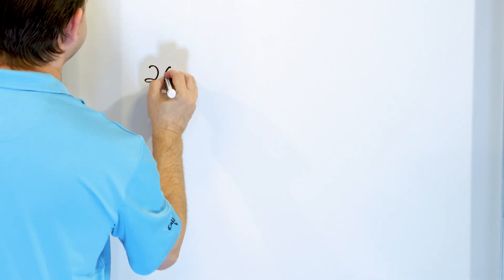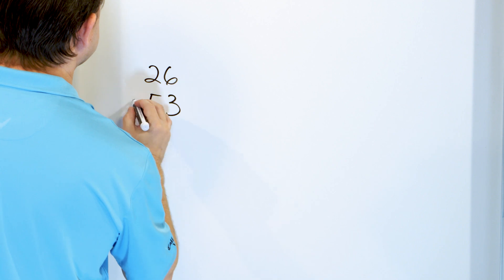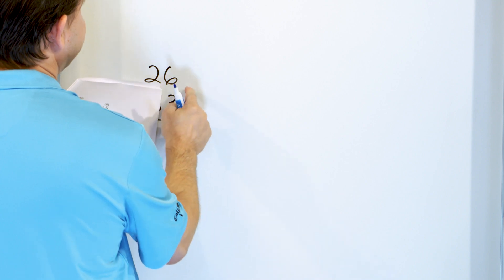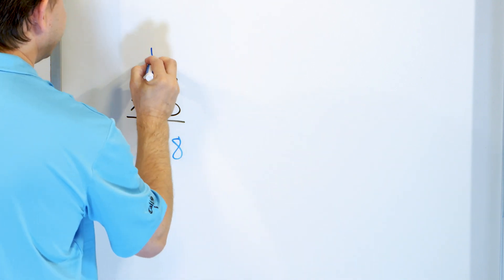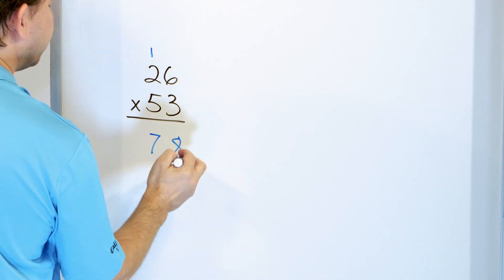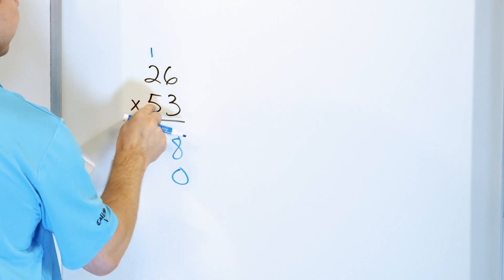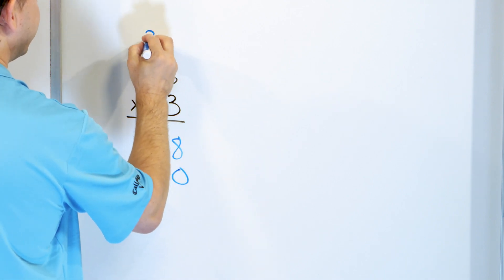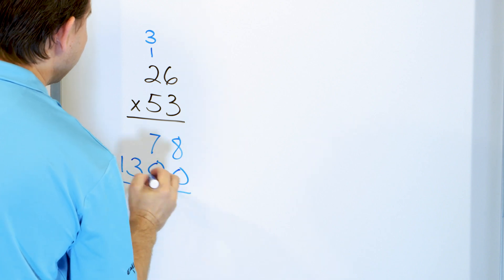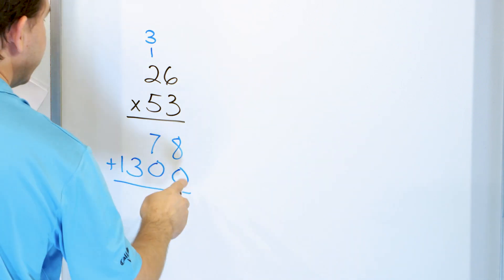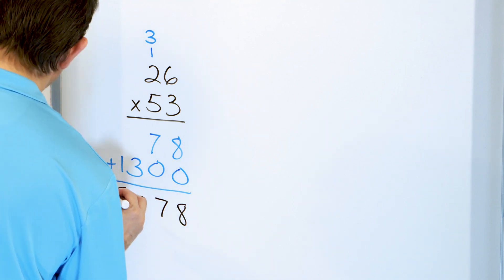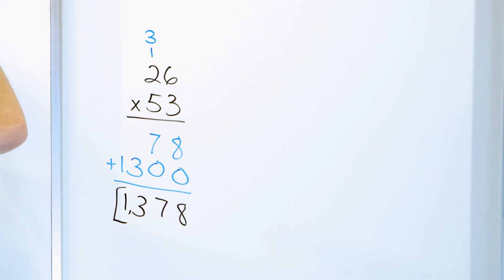We only have two more problems. Let's take a look at 26 times 53. Ignore the five. Six times three is 18 — put the eight, carry the one. Three times two is six, plus one is seven. Now multiply by five — drop a zero. Five times six is 30 — write zero, carry a three. Five times two is 10, plus three is 13. Adding: eight plus zero is eight, seven plus zero is seven, the three and the one just come down. The answer is 1,378.